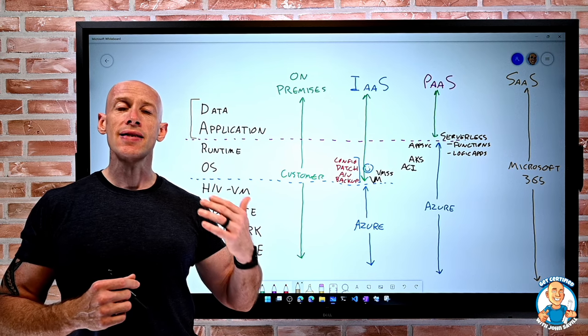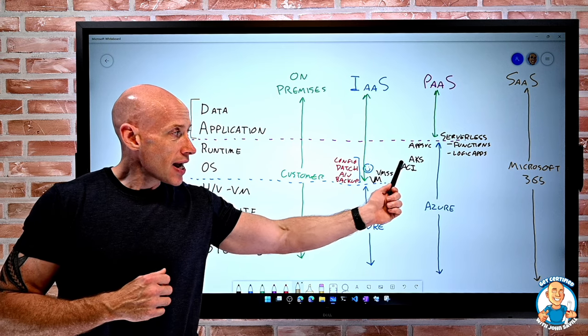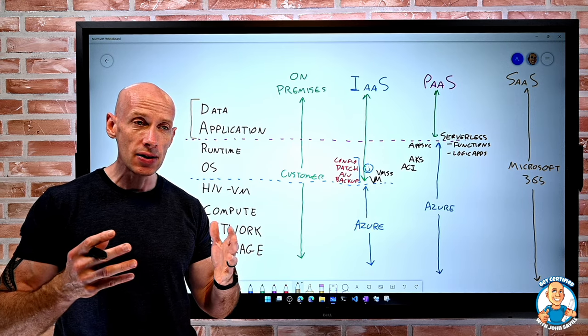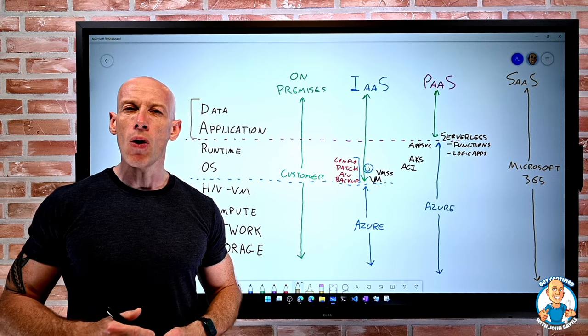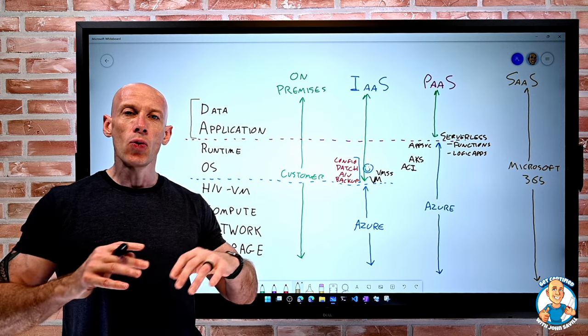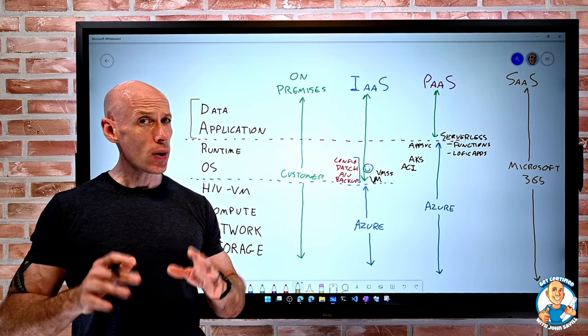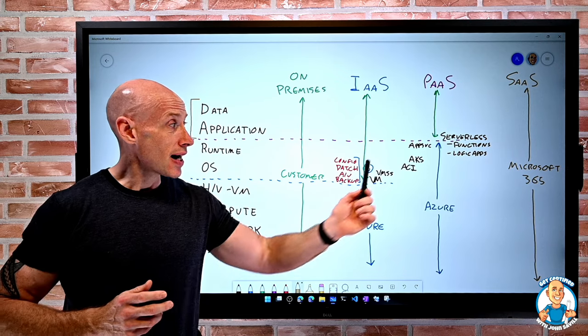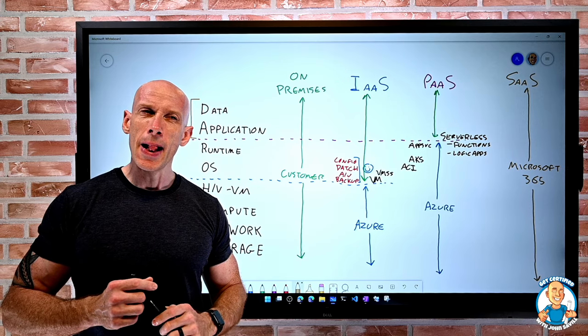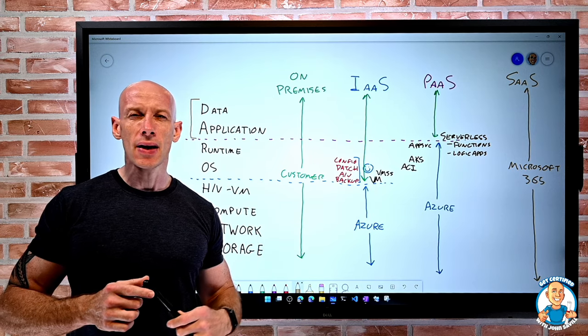well, Kubernetes is kind of the gold standard in container orchestration. So the AKS, the Azure Kubernetes service, would most likely be what we're going to do if we have any kind of container-based workload we need to run in a full, rich Azure environment. There are other ways to run containers. I can even run containers as part of an app service plan. But if we talk about the core key service, typically, it's going to be AKS.